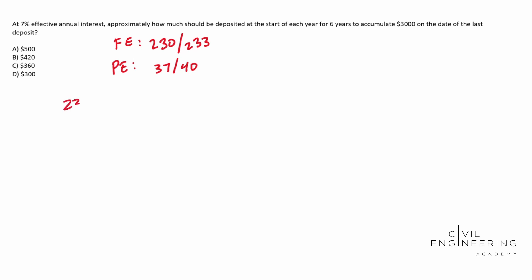So on page 230 or 37, so this is the FE and this is the PE, you get this formula. A equals F times I over 1 plus I to the N power, which is, oh, we're not solving that yet.